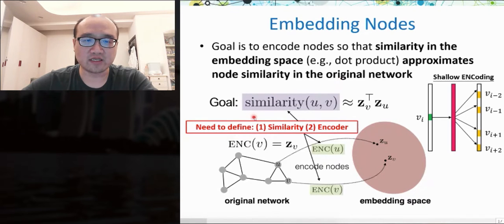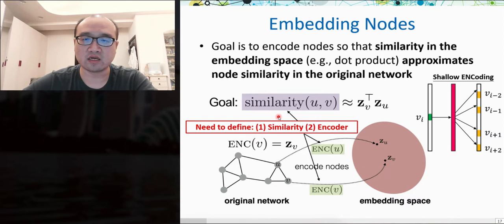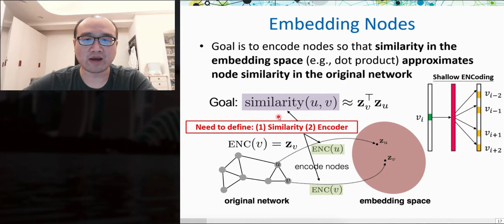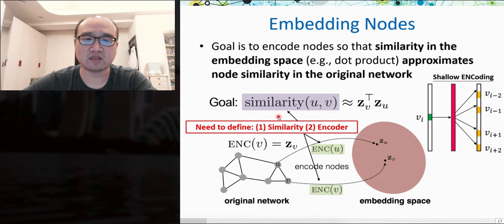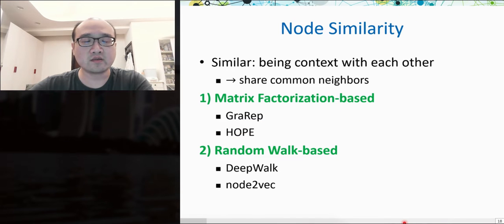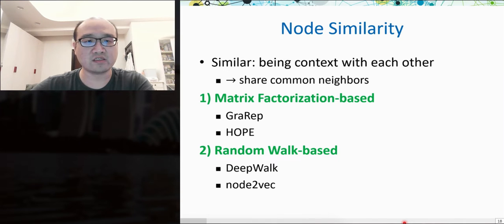We need to define two things: first, similarity in the graph, and second, how to encode nodes to generate embeddings. A shallow neural network can serve as the encoder. We need to define similarity, which is the core of embedding—we want the dot product result to approximate something encoding node similarity. Similarity can mean being connected, sharing common neighbors. We will introduce two approaches: matrix factorization-based and random walk-based.